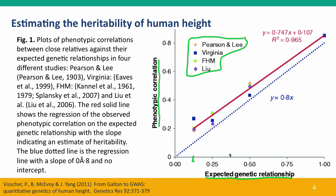A statistical analysis of how well the points fit a straight line gave a slope of 0.747, about 0.75, which is the heritability in these studies.